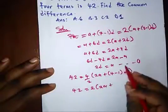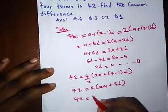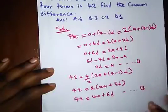plus 3D. So we have 42 is equal to, opening bracket, we have 4A plus 6D. This is equation 2.